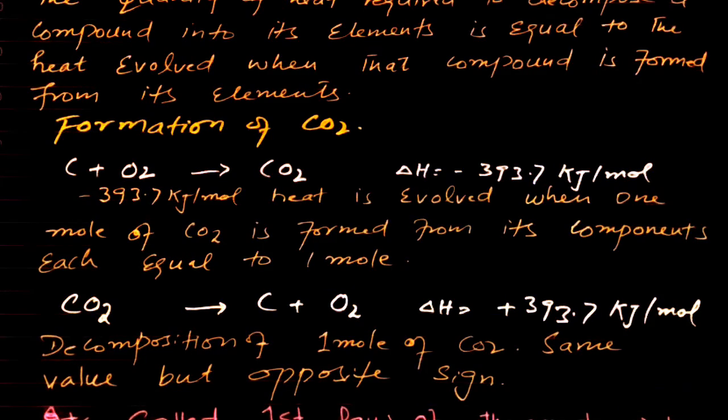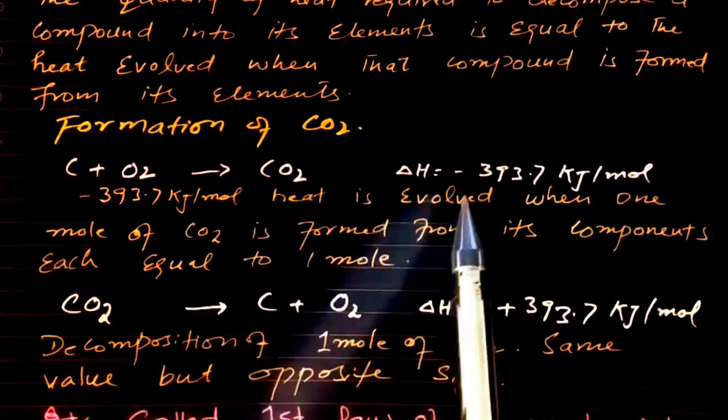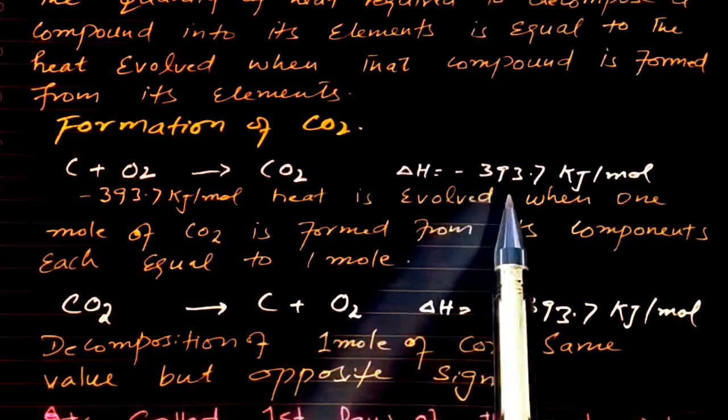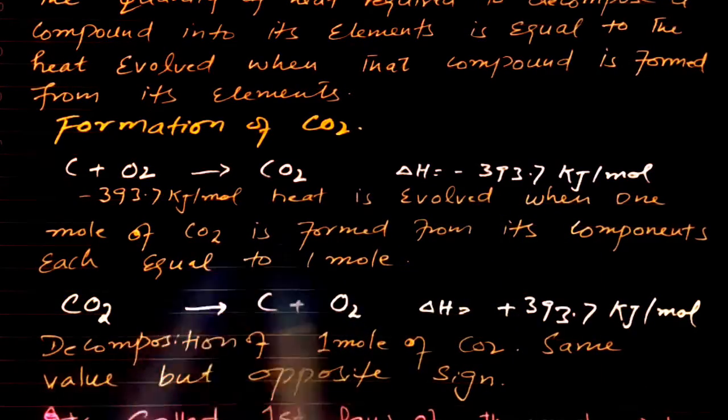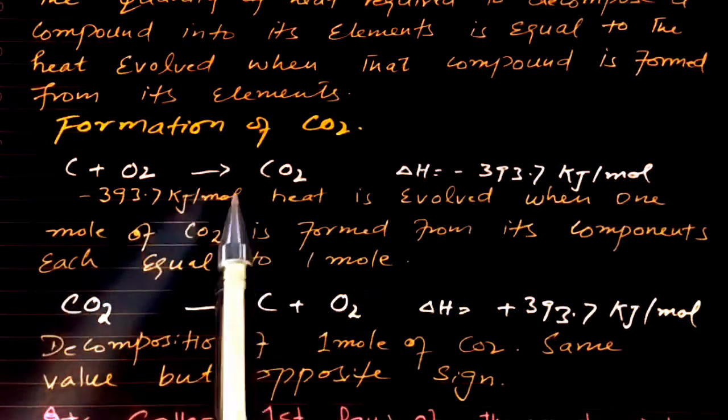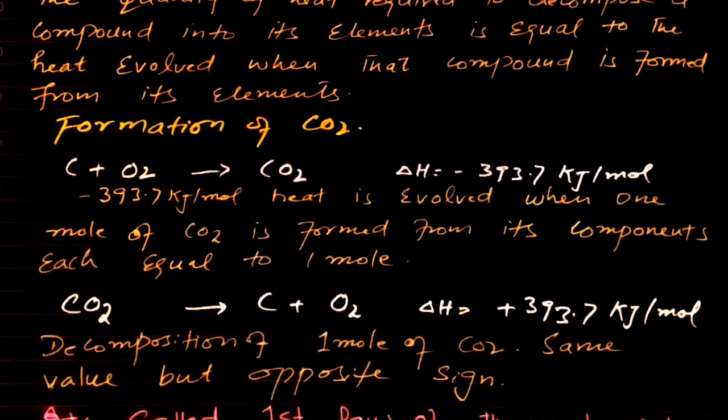Carbon and oxygen combine to form carbon dioxide. In this case, energy released is -393.7 kJ per mole. This is the heat evolved because there is formation of carbon dioxide. Whenever there is formation of a compound, energy will be released.